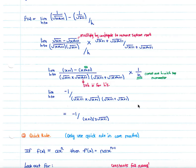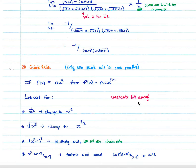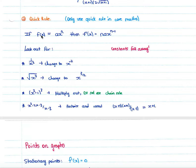When you are not asked to use first principles, you can simply use the quick rule. The quick rule states: if f(x) = ax^n, then f'(x) equals n·a·x^(n-1). To get the derivative, you simply bring your n down, giving n·a times x, and decrease your exponent by one, giving n minus one.